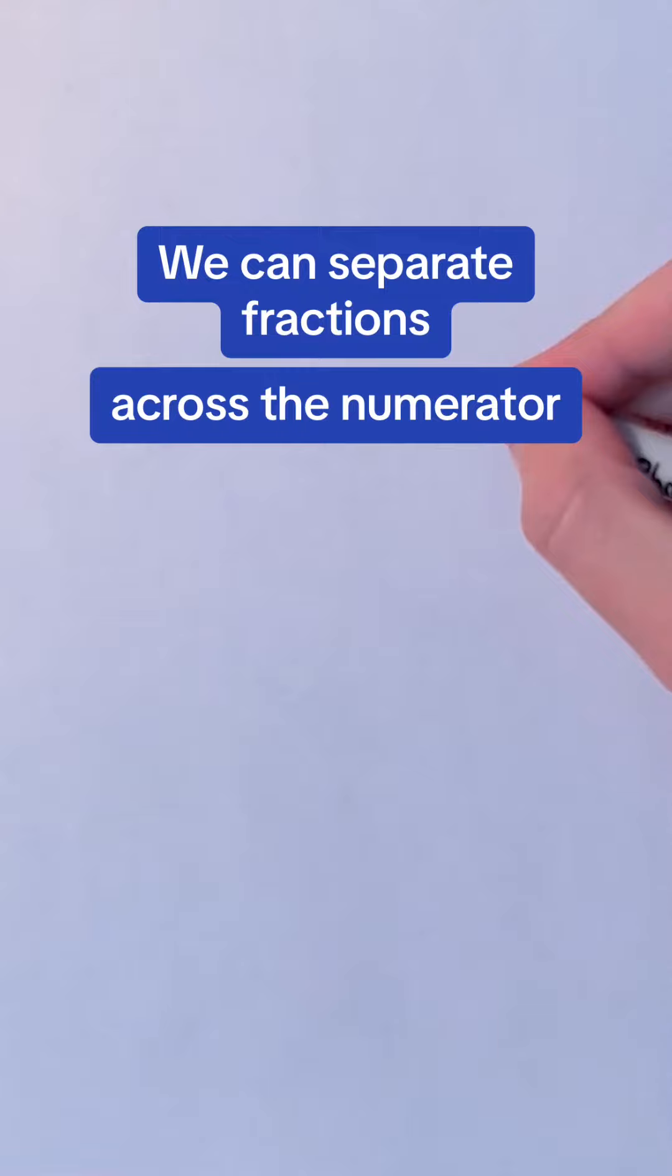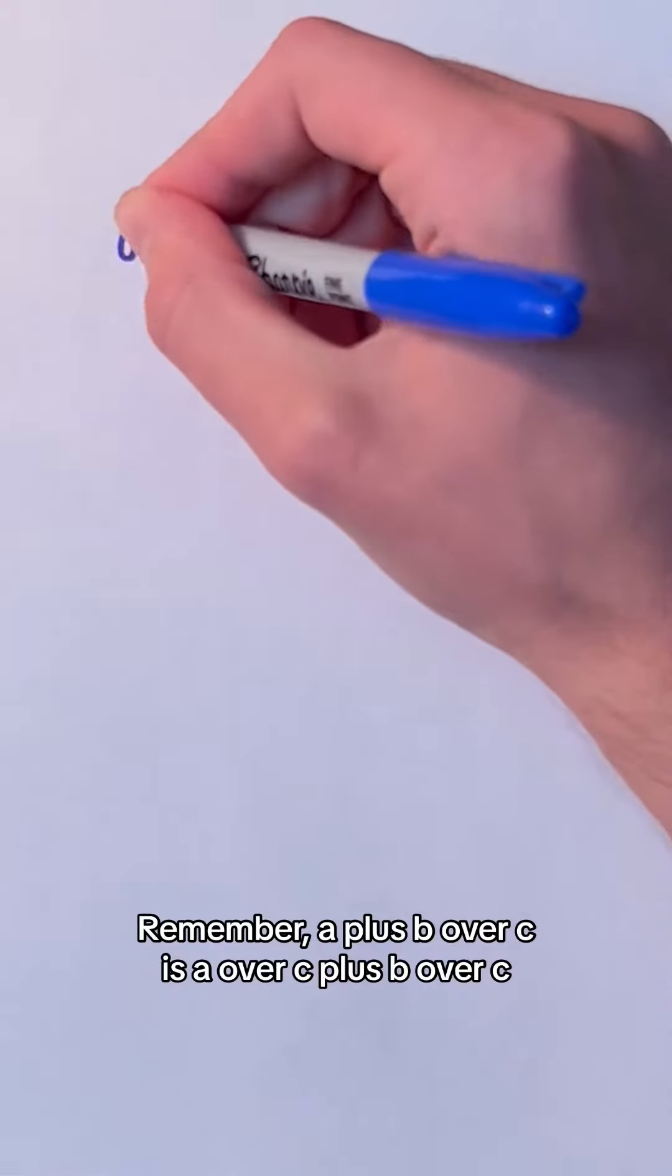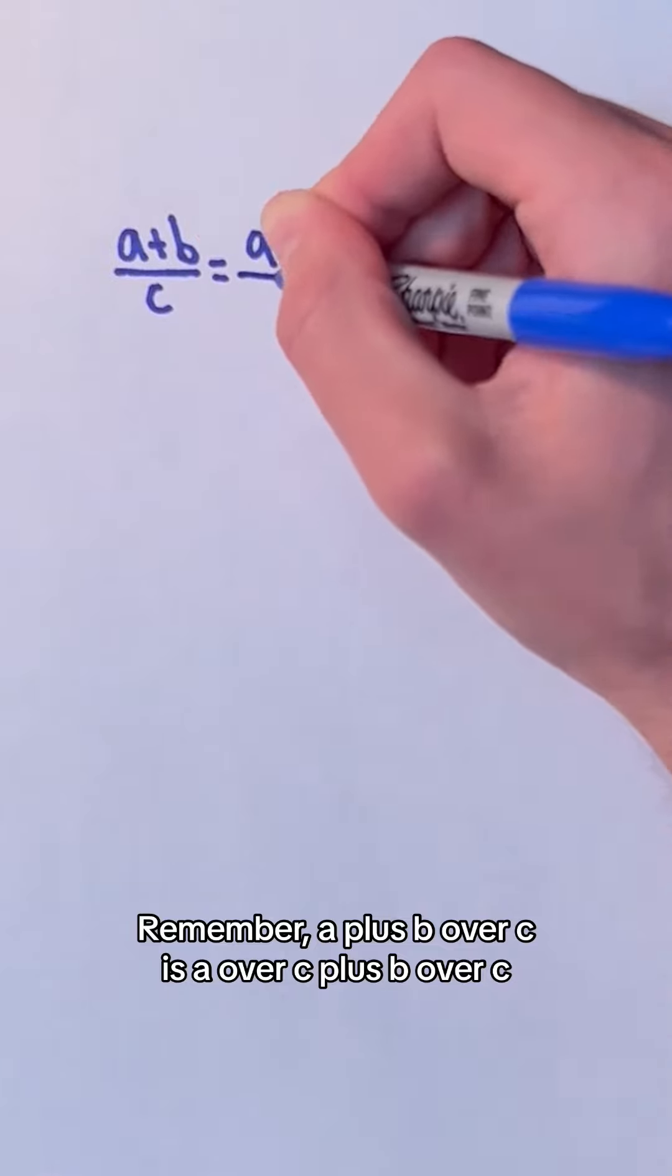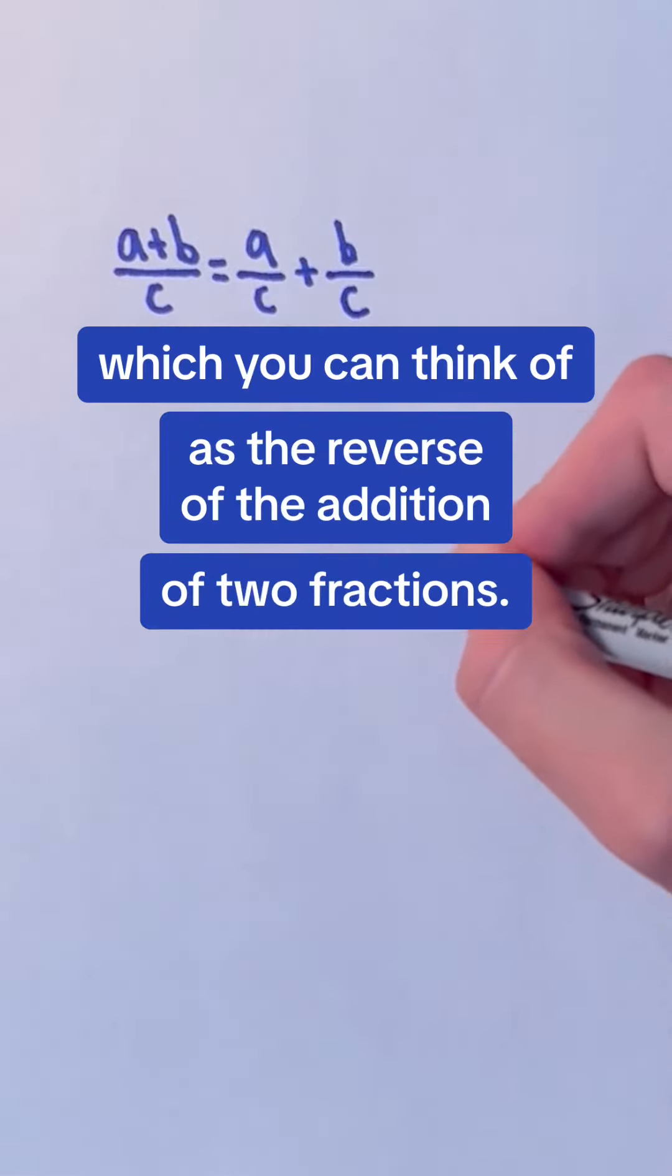We can separate fractions across the numerator if there are multiple terms being added in the numerator. Remember, a plus b over c is a over c plus b over c, which you can think of as the reverse of the addition of two fractions.